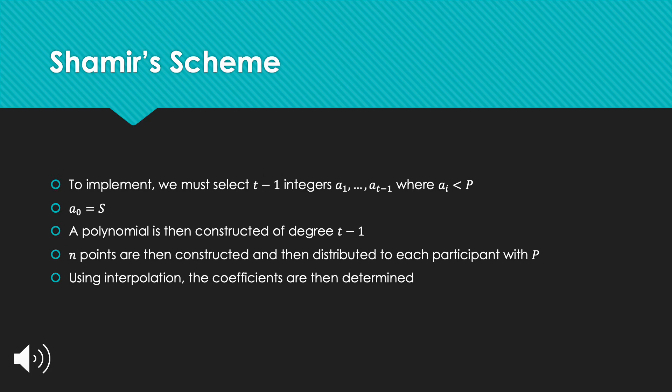To implement Shamir's scheme, we select T-minus-1 integers from A-sub-1 up to A-sub-(T-minus-1), where each A-sub-I is less than P. A-sub-0 is considered to be the secret. A polynomial is then constructed with a degree of T-minus-1. N points are then constructed and distributed to each participant. Using Lagrange interpolation, the coefficients of the polynomial are then determined.